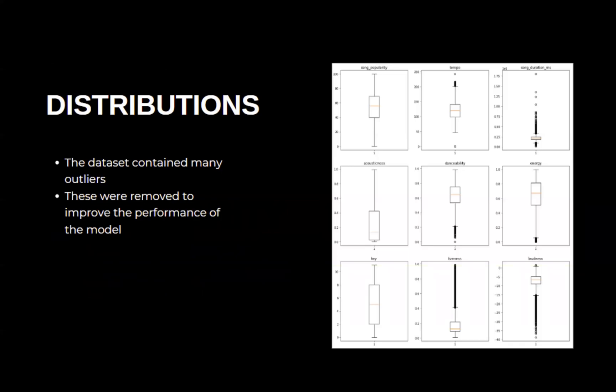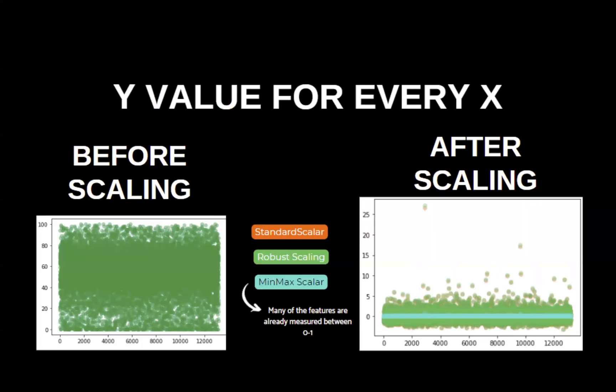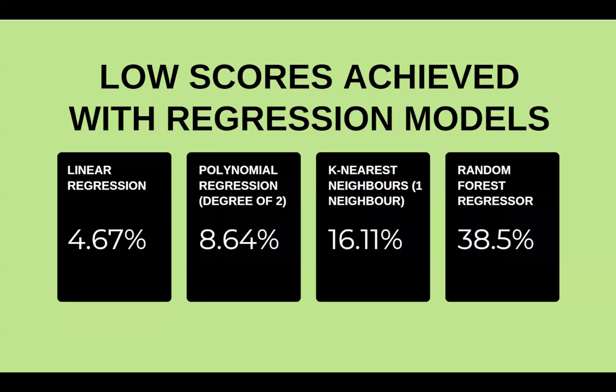One of the many things I did for EDA was engineering features, looking at correlations, and dealing with outliers shown in these box plots. I also went with a min-max scaler to improve my model performance, because many of the song features were already measured from 0 to 1.